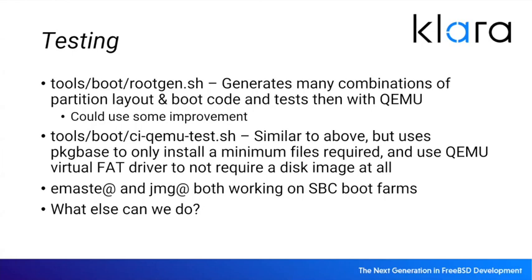Another issue is that we don't communicate from the bootloader to the kernel what the console should be — and that doesn't require ACPI in the bootloader to fix. The idea is to pass the UID of the console serial device to the kernel, with a little kernel code that looks for that and uses it instead of the old-style I/O port address to select the console. If someone wants to do that work, Warner will schedule a Zoom call and give a brain dump.